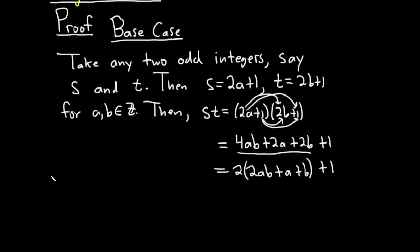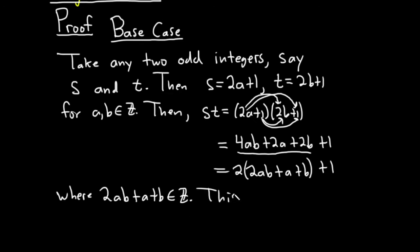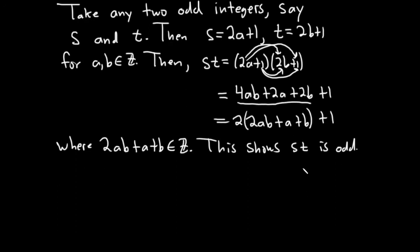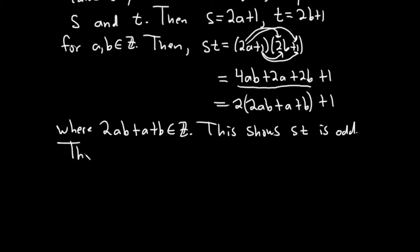We know that 2ab + a + b is an integer. So we've basically shown that the product st is equal to 2 times an integer plus 1. That's exactly what it means for st to be odd. So this shows st is odd. We've shown that our statement is true when m is equal to 2, so S_2 is true.